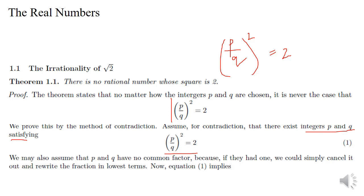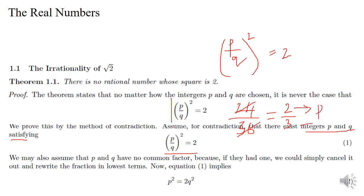We also assume that P and Q do not have any common factors, because if a fraction has a common factor, we can cancel it and express the fraction in simplest form. For example, 24 by 36 — since 24 and 36 have 12 as a common factor, dividing by 12 gives 2 by 3 as the new P by Q. So we assume P and Q are already expressed without any common factors.